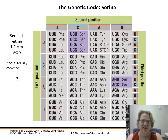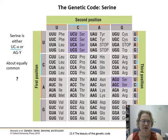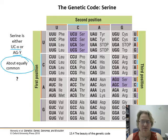Serine is weird — it has two completely different starting codes. It's either UC-anything or AG-pyrimidine, and they both occur about equally. We're not sure why; it's one of those cool mysteries we're still looking into.